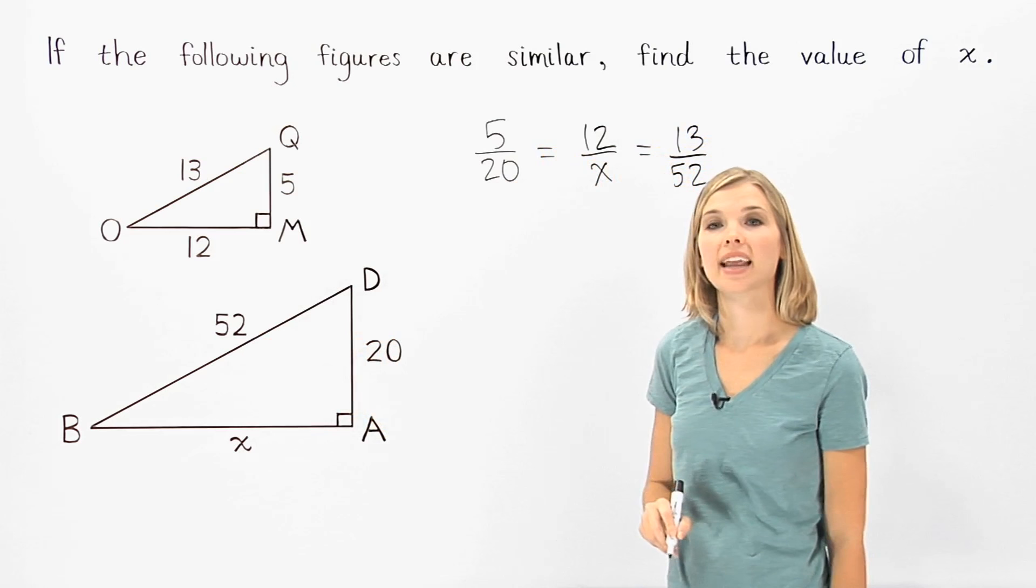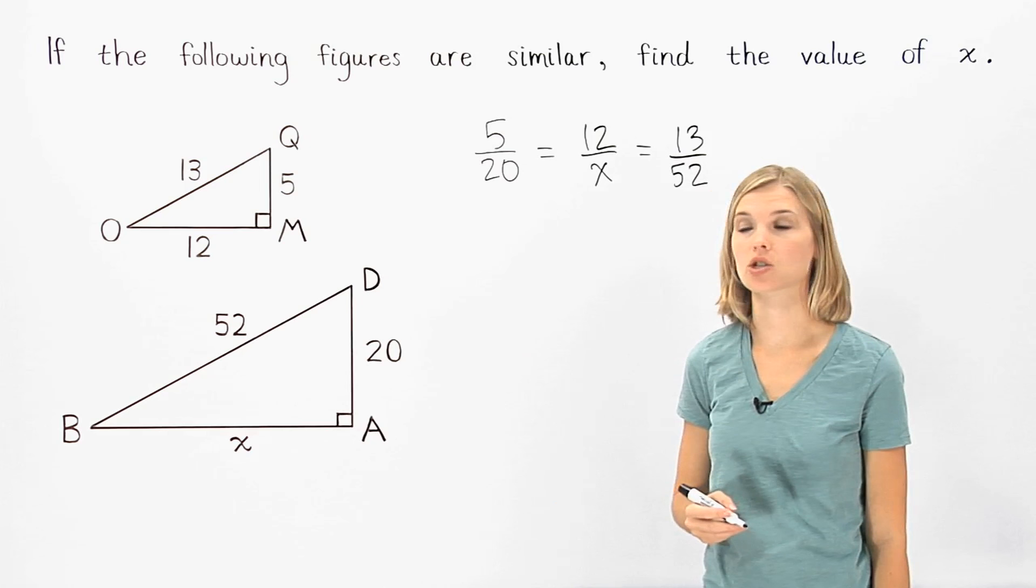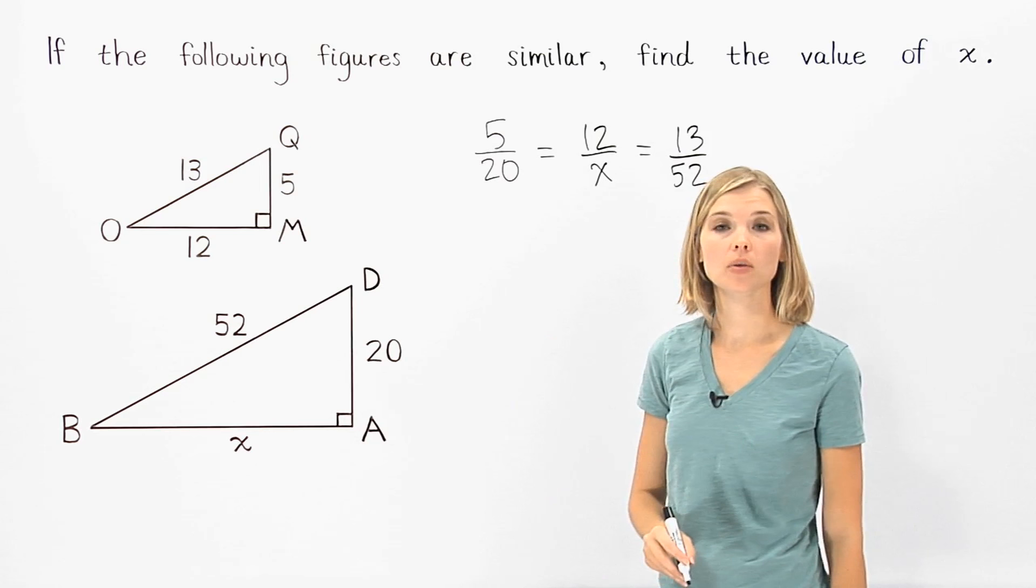Now, to find the value of x, let's use the proportion formed by the first two ratios. 5 over 20 equals 12 over x. To solve a proportion, we use cross products.